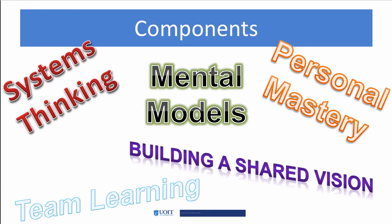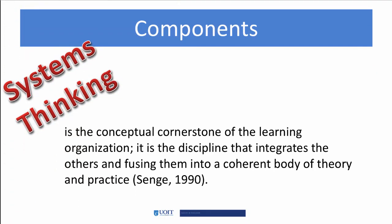Senge describes five key components of successful learning organizations, all of which must be present. The first is systems thinking, which Senge believes is the cornerstone of learning organizations. However, he also believes that systems are not used correctly in the majority of organizations, because we tend to look at obvious solutions to problems and take shortcuts without considering the long-term ramifications. Thus, Senge encourages looking into the entire system and having a holistic vision, not a limited one.